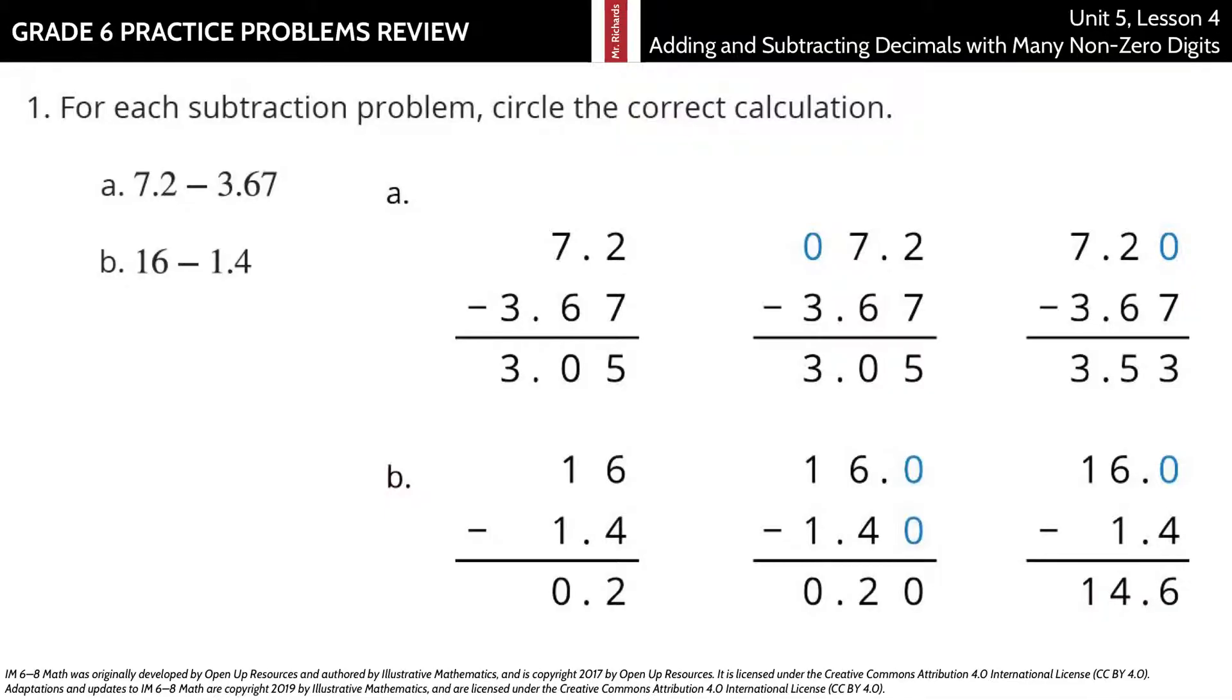Question 1. For each subtraction problem, circle the correct calculation. In A, 7 and 2 tenths minus 3 and 67 hundredths.